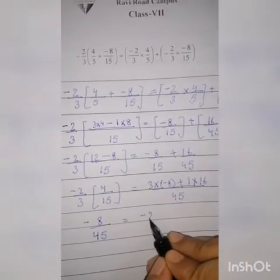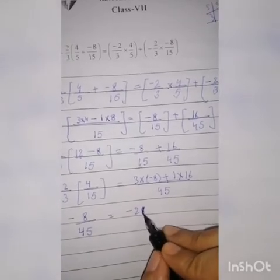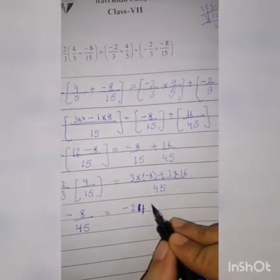Equal to: 8 times 3 is 24, plus 16 over 45. This cannot be simplified further, so it will remain like this.